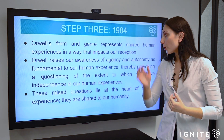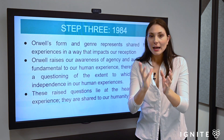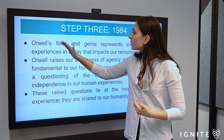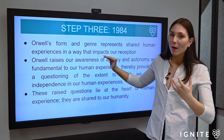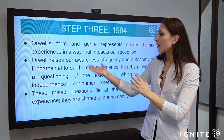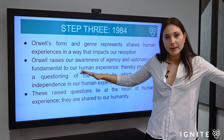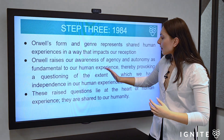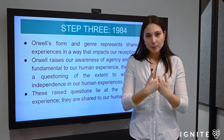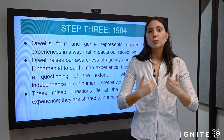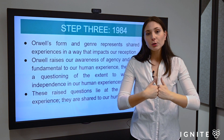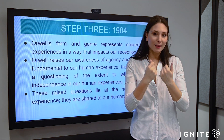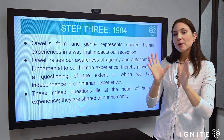Using the specific example of Orwell — and this links to The Crucible and other texts too — here's the framework: first, the composer's form and genre represents human experience in a certain way; that's how this text tells human experience. Second, because of the way it's told, it raises an awareness — link to your body paragraphs: subjection to control, integrity, interpersonal connection. Third, these raised questions lie at the heart of human experience and we're able to engage with them as readers, which elucidates shared human experience because those ideas resonate with us.